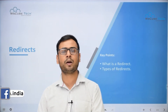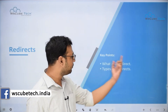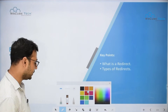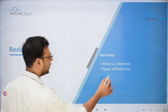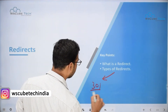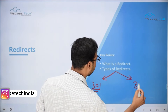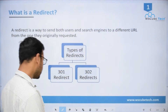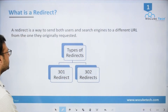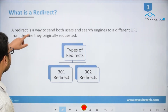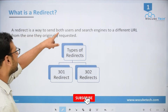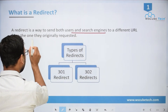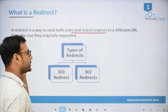We are going to study what are redirects, how do we implement them, and what are the two famous types — that is 301 redirect and 302 redirect. Let's begin with the basic definition: a redirect is a way to send both users and search engines to a different URL from the one they originally requested.